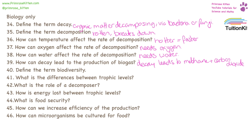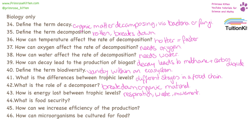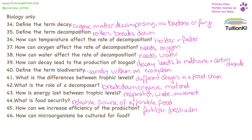Biodiversity is a variety of species in an ecosystem. Trophic levels are different stages in a food chain. A decomposer's role is to break down any organic material. In a food chain between trophic levels, energy is going to be lost from movement, respiration, and through waste — so faeces and urine. Food security is having a reliable source of affordable food. We can increase the efficiency of food production by using fertilizers and pesticides. Microorganisms can be cultured for food — for example, mycoprotein is a large protein which we can eat.